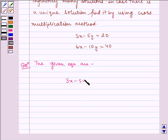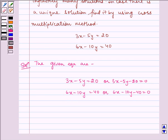3x minus 5y equals 20, or 3x minus 5y minus 20 equals 0, and 6x minus 10y equals 40, or 6x minus 10y minus 40 equals 0.